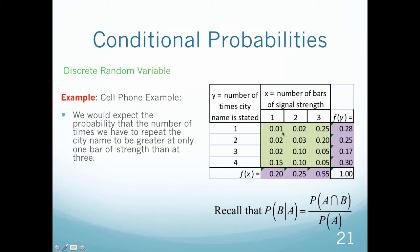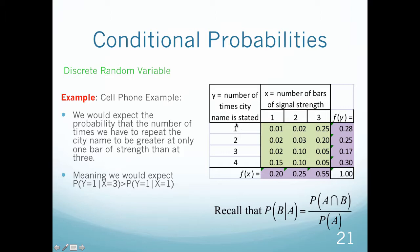We can see these probabilities get bigger when there's only one bar of signal strength. So mathematically, we'd expect the probability of Y equals 1 given X equals 3 — three bars of signal strength and saying the name only once — to be greater than the probability of saying it once given signal strength of only one bar. And indeed, this probability is greater than that one.